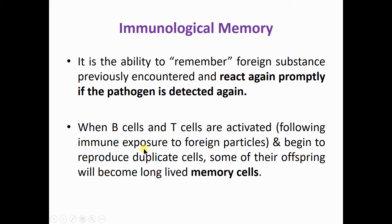How does it happen? When B cells and T cells are activated following immune exposure to foreign particles, they begin to reproduce duplicate cells from their clone. Some of their offspring will become long-lived memory cells, along with plasma cells in the case of B cell clones, and helper T cells, cytotoxic T cells, and suppressor T cells in the case of T lymphocyte differentiation. These long-lived memory cells are produced by the first exposure to foreign particles.